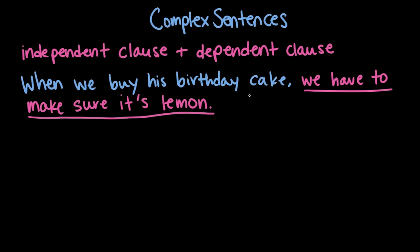We've got a subject — 'we' — and a verb — 'have to' — and well, we have multiple verbs. Got a lot: have to make sure. So the sentence is relying on some information that's not provided, but it does still stand as its own sentence. Like, we could have a sentence before it that's like 'we're gonna go buy a birthday cake. We have to make sure it's lemon.' Those can be two separate sentences.